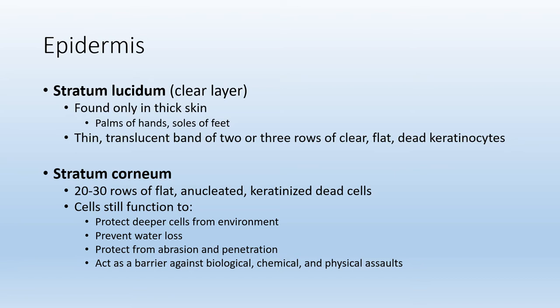Finally, the most superficial layer of the epidermis is known as the stratum corneum. This layer includes 20 to 30 rows of flat cells that do not have their nucleus. The purpose of this layer is to protect deeper cells from abrasion, penetration, and wear and tear. This is also the layer that functions as a barrier against many different assaults to the human body.